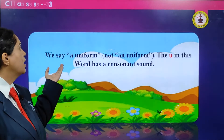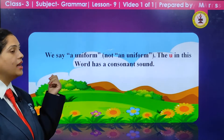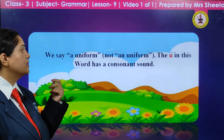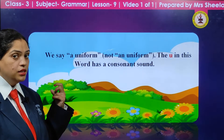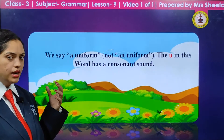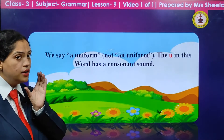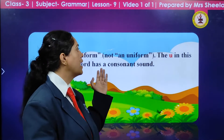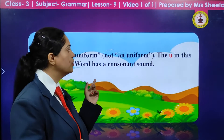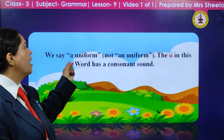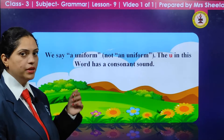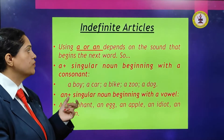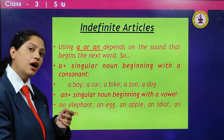Same way, we say a uniform, not an uniform. Why? Because the U in this word has a consonant sound — it has the 'yu' sound, and Y is not a vowel. So we are going to use a uniform, not an uniform. These are the few places where we have to be careful in using a and an.